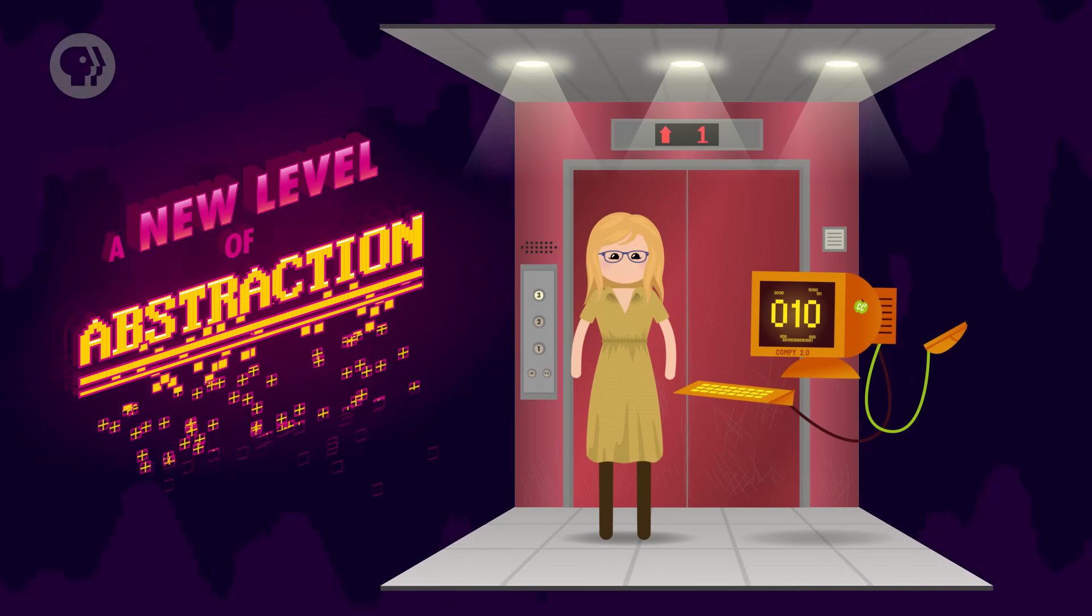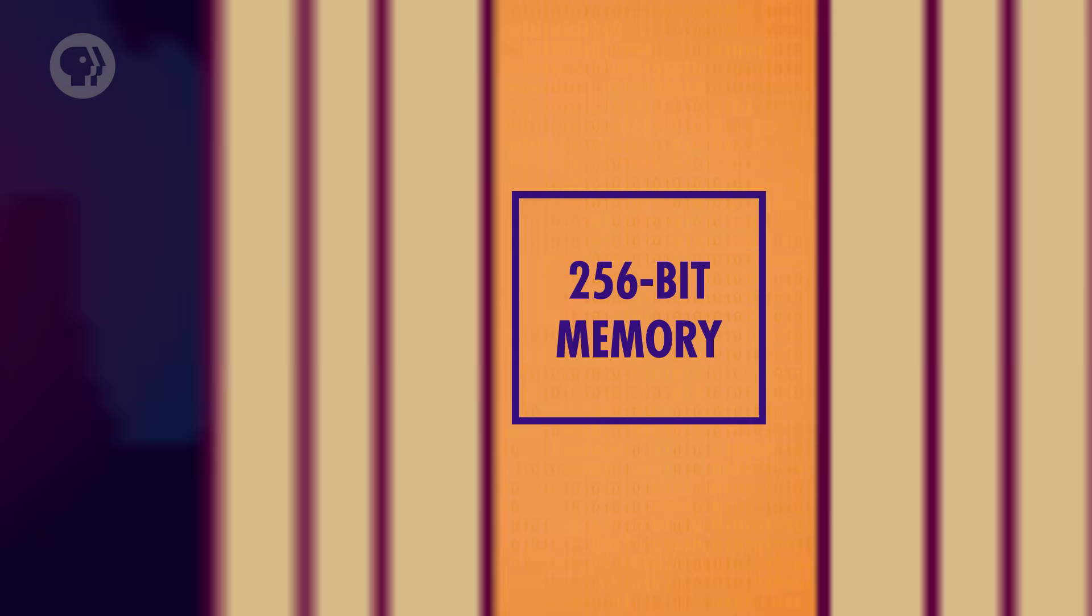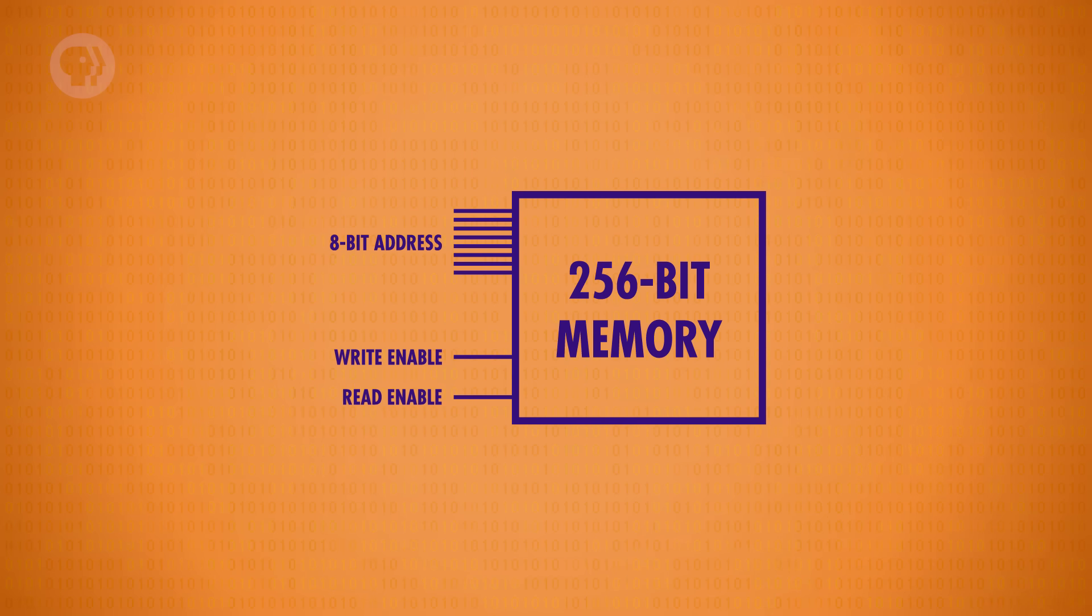OK, it's starting to get complicated again, so let's make our 256-bit memory its own component. Once again, a new level of abstraction. It takes an 8-bit address for input, the 4 bits for the column, and 4 for the row. We also need write and read enable wires. And finally, we need just one data wire, which can be used to read or write data.